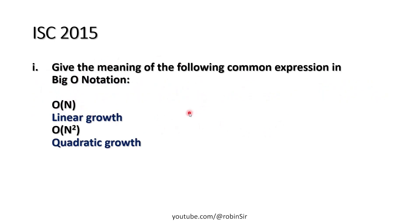In 2015 one question came from computational complexity. Give the meaning of the following common expressions in Big O notation. So first one is Big O N. Now this N means linear growth, whereas Big O N squared means quadratic growth.